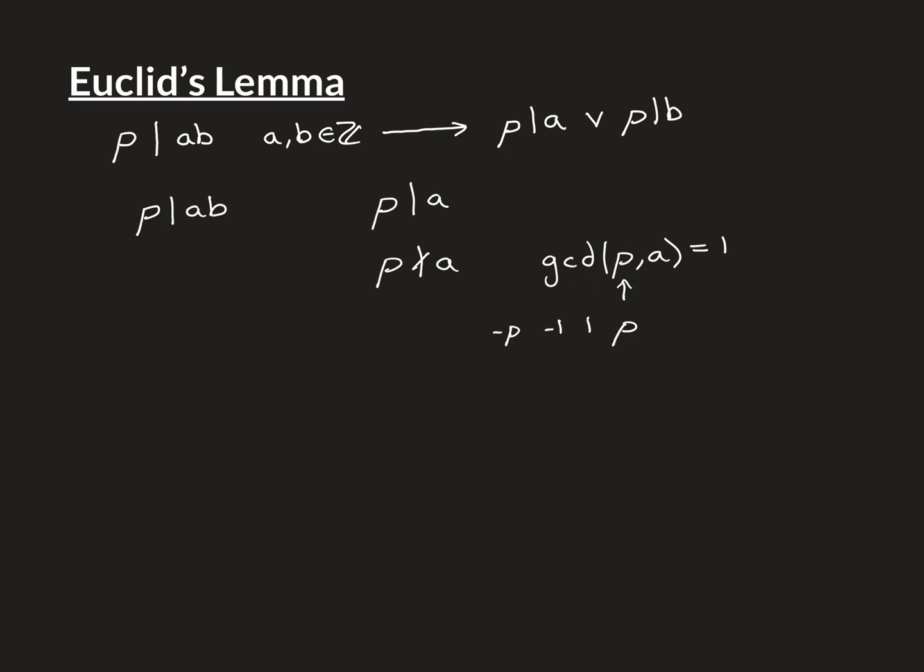So if we're now thinking about common divisors of P and A, well, we've said P doesn't divide A. So P is not a divisor of A and negative P is not a divisor of A. So these two are gone.